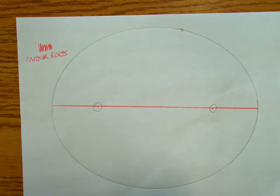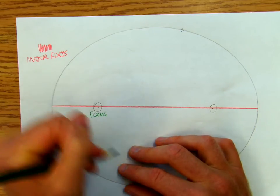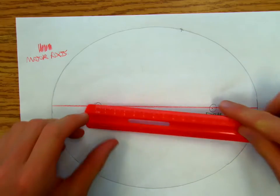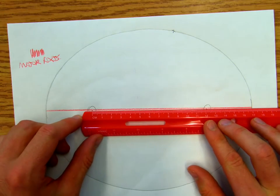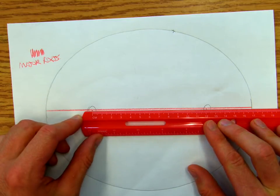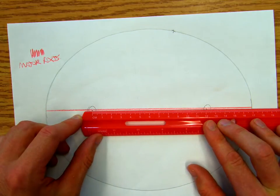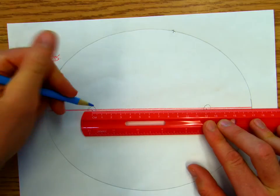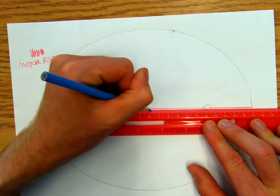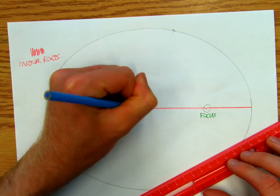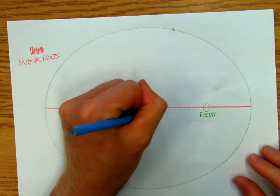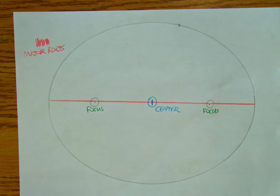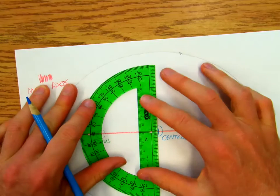We're going to call this one a focus, and we're going to call this one a focus. Halfway between the foci — they're about 12.1 centimeters apart — so right about there, at the 6-point mark, that point right there is going to be the center. And then I'm going to need a protractor, because we're going to draw a perpendicular to that line at the center.